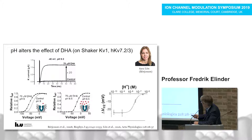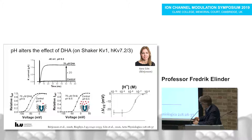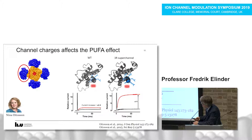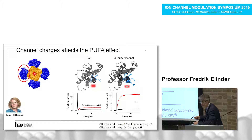In the pH experiment: changing to high pH makes the compound negatively charged, giving a large shift in the GV curve. At much lower pH, the compound is uncharged and there is no effect — a very clear pH dependence. We also mutated the ion channel. Nina — who is in the audience with a poster — modified the top of the voltage sensor S4 extensively. The best result: adding two extra arginines on top of S4 produced an enormous increase in the effect of polyunsaturated fatty acids, seen as a very large shift of the GV curve.